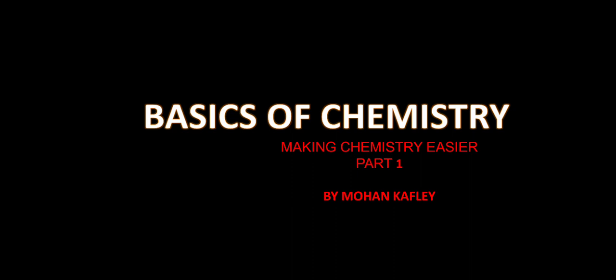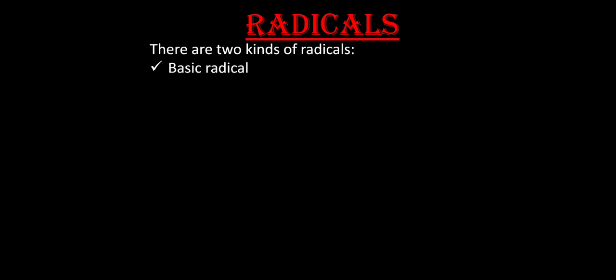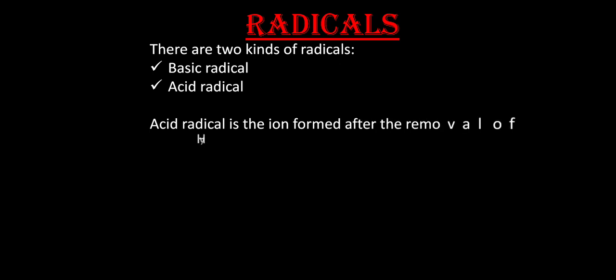Let us start part 1 of basics of chemistry, trying to make chemistry easier. The first topic is radical — a very common topic but most students fail to understand it. There are two kinds of radicals: basic radical and acid radical. The acid radical is the ion formed after the removal of a hydrogen ion from an acid. If you remove H+ from an acid, what is left — that anion part — is the acid radical, or the negative part.